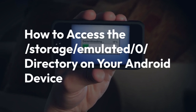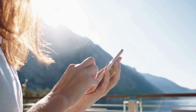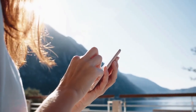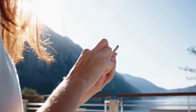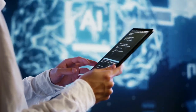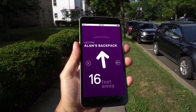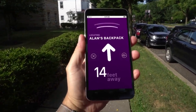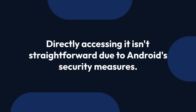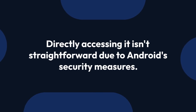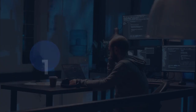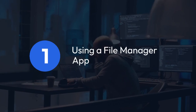We're going to explain how to access the /storage/emulated/0/ directory on your Android device. This directory is essentially your phone's internal storage, where most of your app's data, downloaded files, and other important information are stored. However, directly accessing it isn't as straightforward as it might seem due to Android security measures. Let's break down a few approaches.